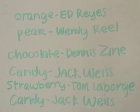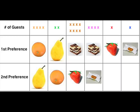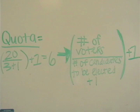Now, the first one is Orange and Rice. The second one is Pear. Then there's Chocolate, represented by Deniz; Candy, represented by Jackese; and Strawberry, represented by LaBonge. Step two is about clearing the quota. Deniz, representing chocolate, with six extra votes above the threshold, would have those surplus votes transferred to Strawberry, represented by Tongue, and Candy, represented by Jackese.